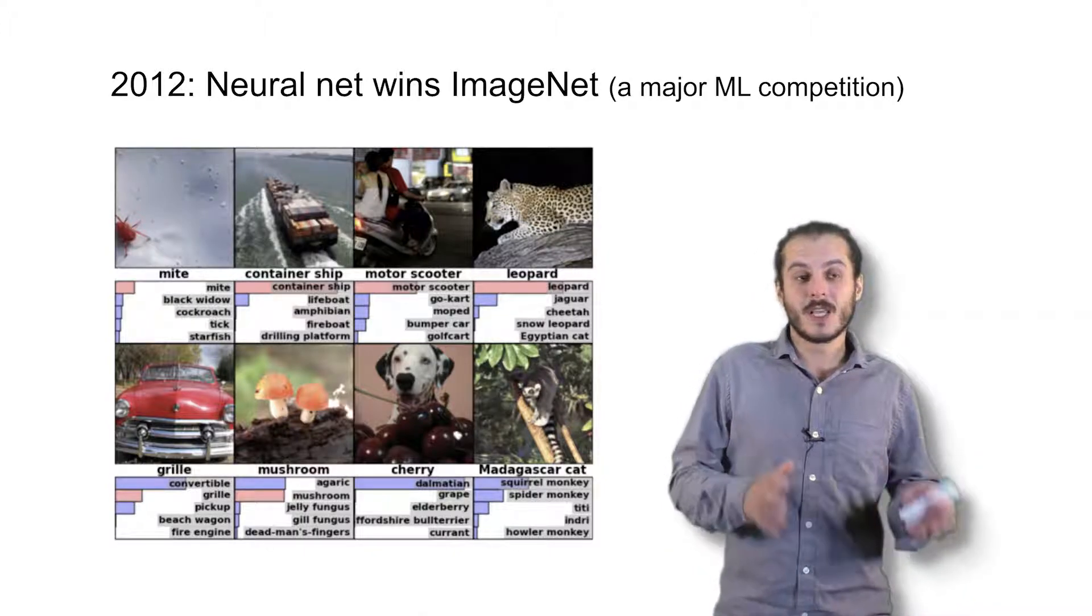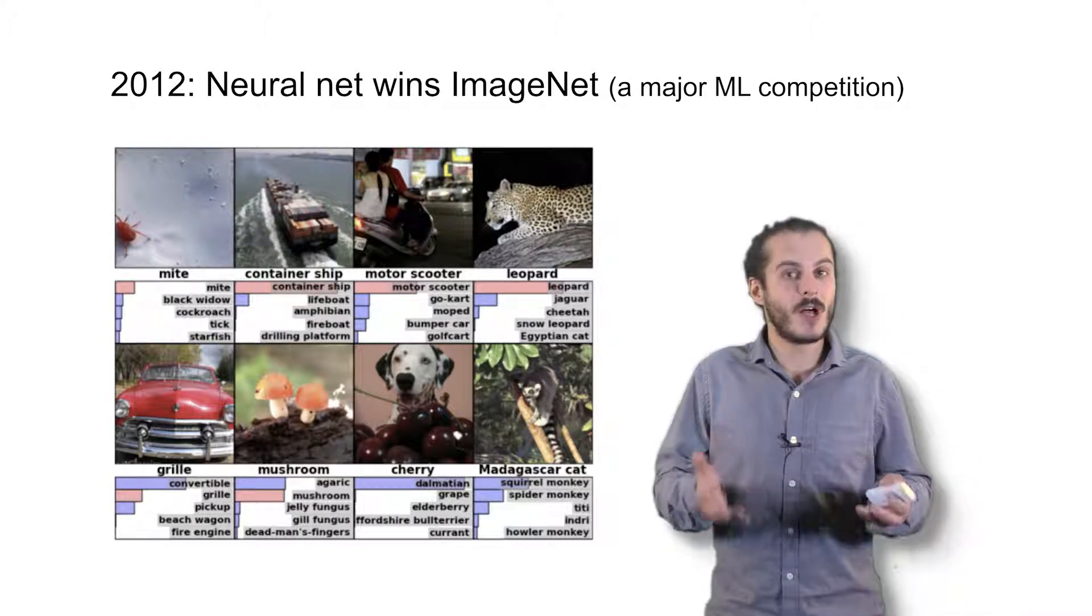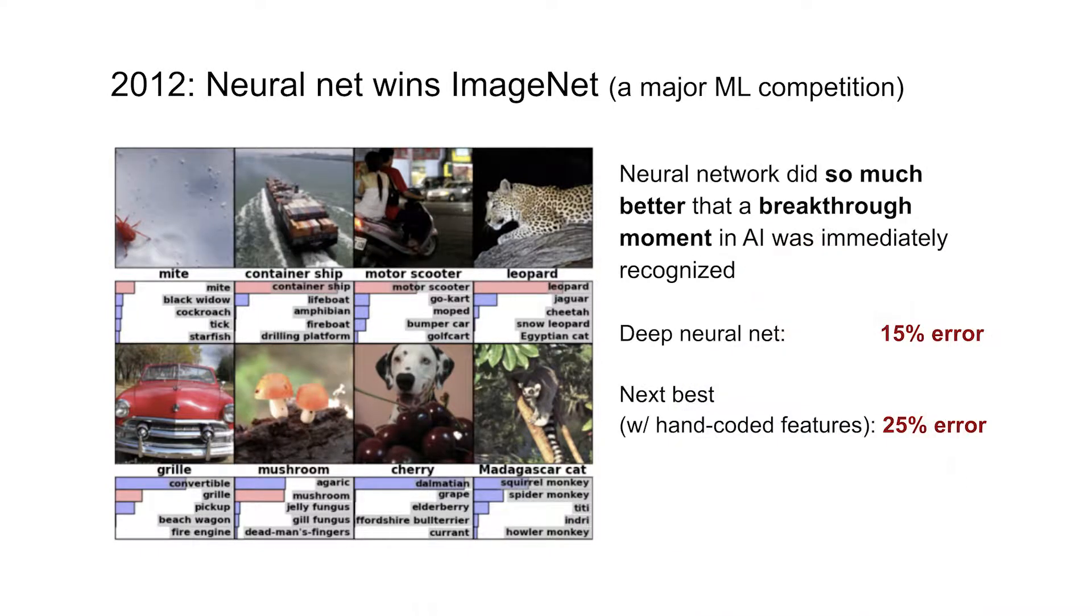In particular, there was the ImageNet competition, which involved classifying images, in which the neural network entry did significantly better than any non-neural network entry.